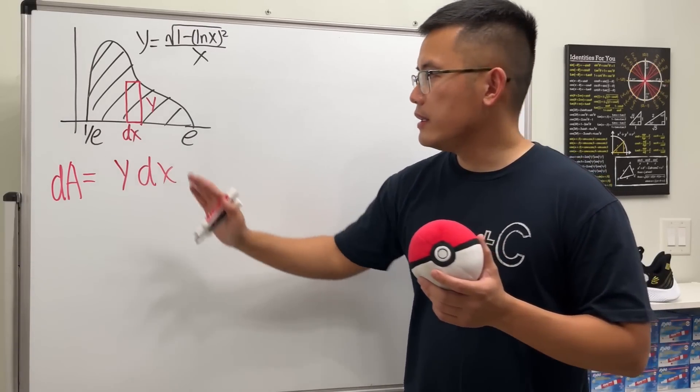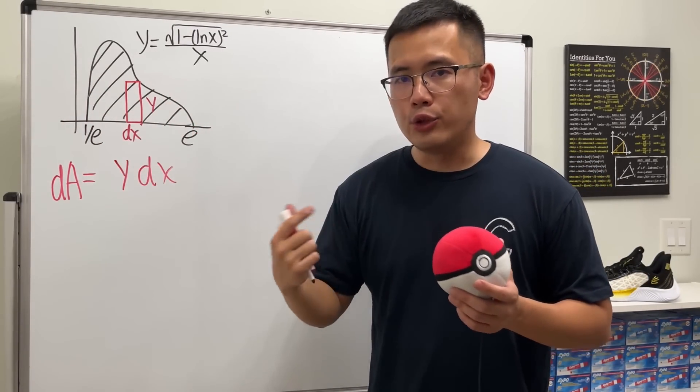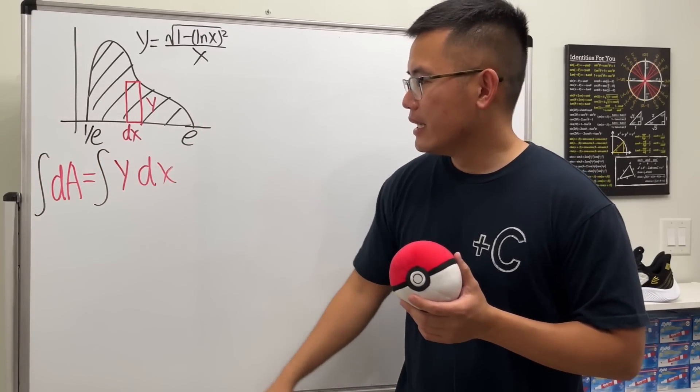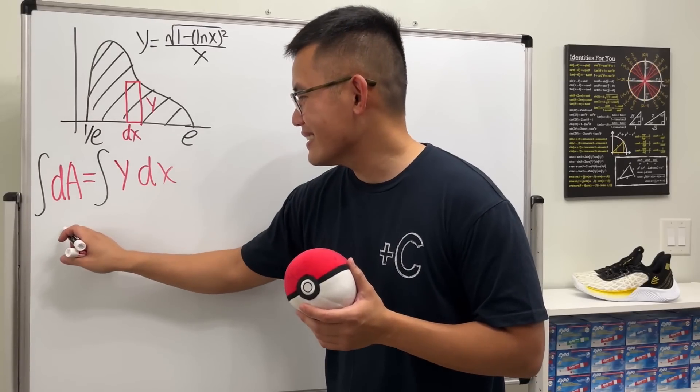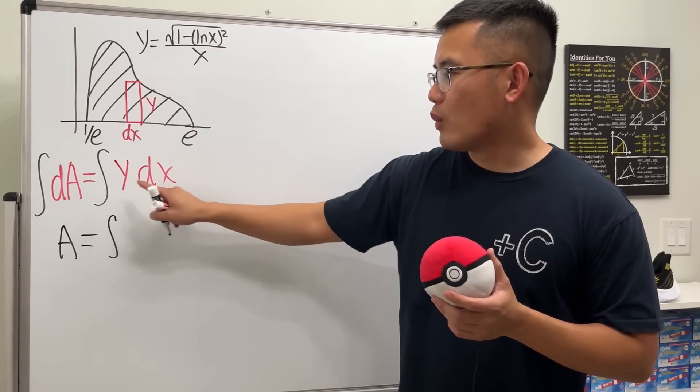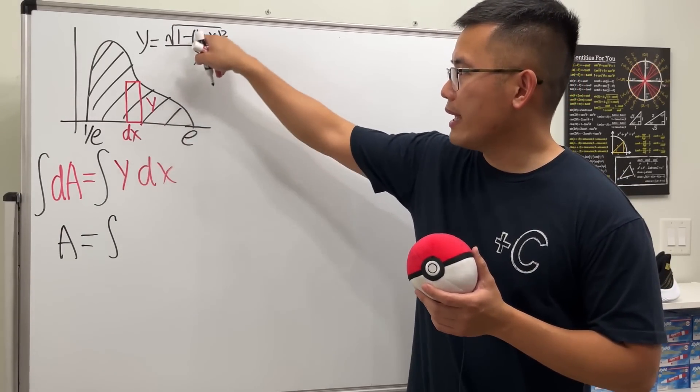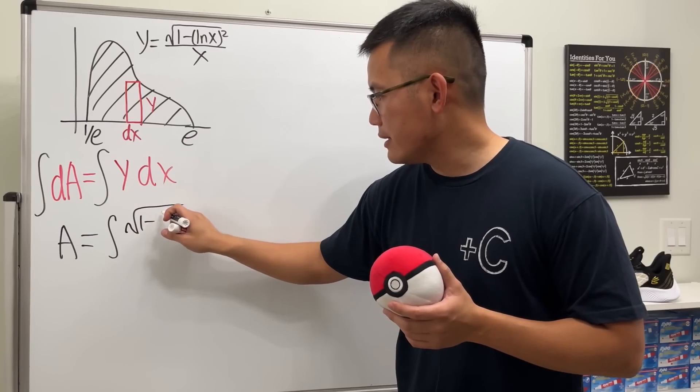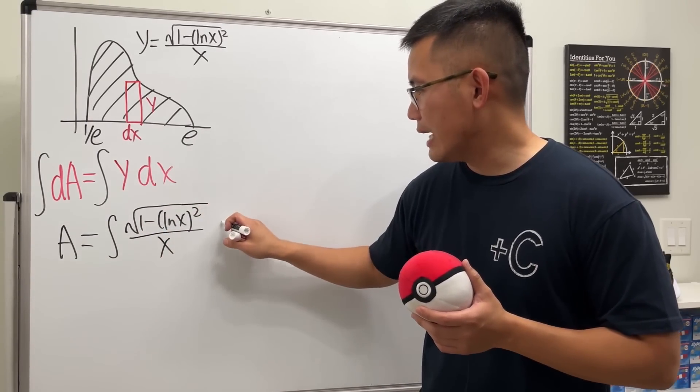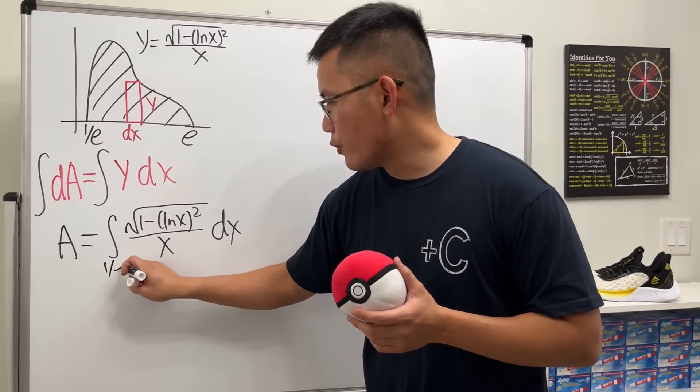To find the whole thing, we'll just have to add up all of such rectangles. To add in calculus, the super version is to integrate. When we integrate all of the differential areas, we get the area. Notice that we have y in the x world, which is not allowed, so we are going to write y as square root of 1 minus (ln x)² all over x. Then we have the dx here, and we will denote that it goes from 1/e to e.